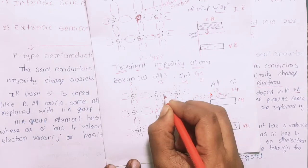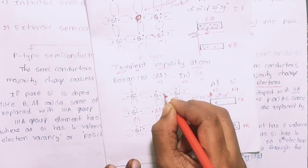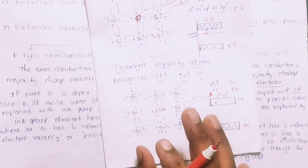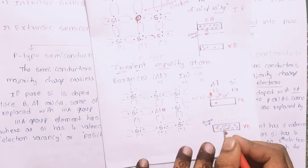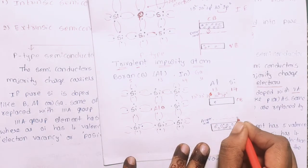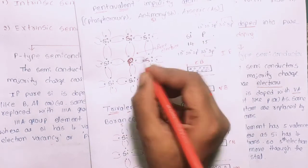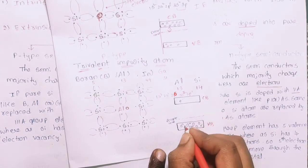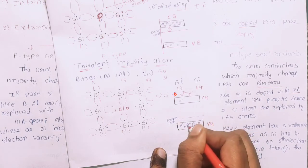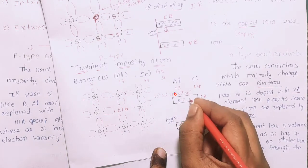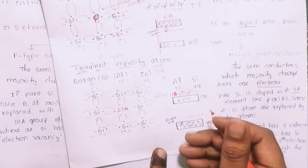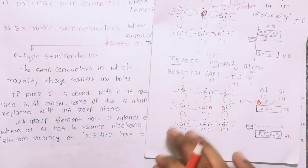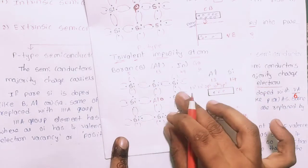This vacancy is a hole. With crores of aluminum atoms doped in, there are many holes created. Holes allow electricity to be conducted easily. The majority charge carriers in P-type semiconductors are holes, and the minority charge carriers are electrons. This is due to the trivalent impurity.